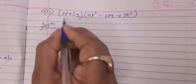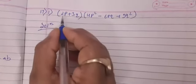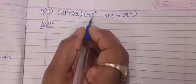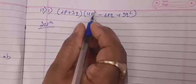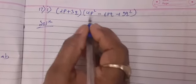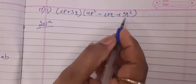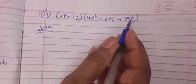It means this is (2p)², so we will convert it. And 3q here is 9q², means (3q)². So this is formula of a³ + b³, (a + b)(a² - ab + b²).